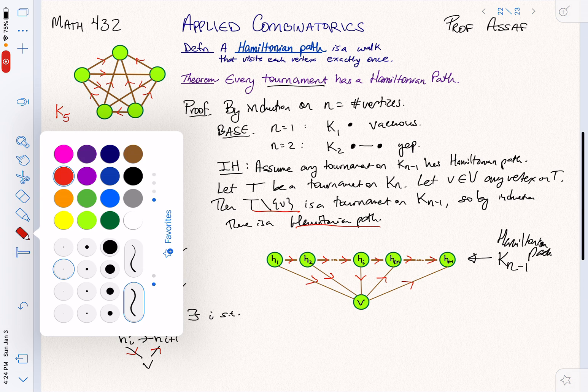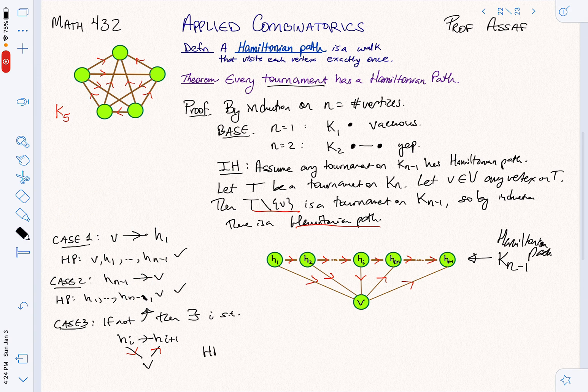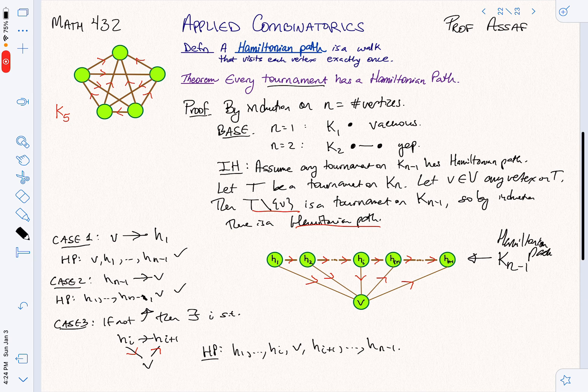In this case, and this is the only case that remains, these three cases are exhaustive. My path is going to be H1 all the way out to HI, tack on V, and then continue back up until you get to the end. This is somewhat constructive in that I can do it iteratively. I can build out my Hamiltonian path by adding vertices one at a time.